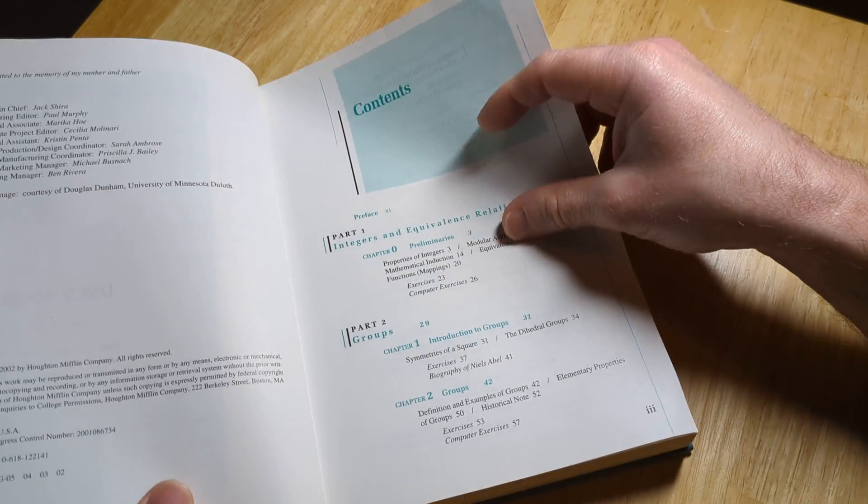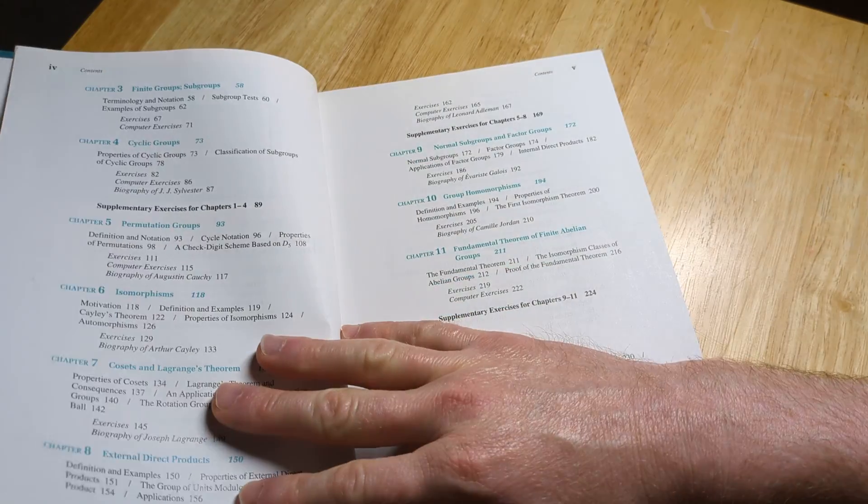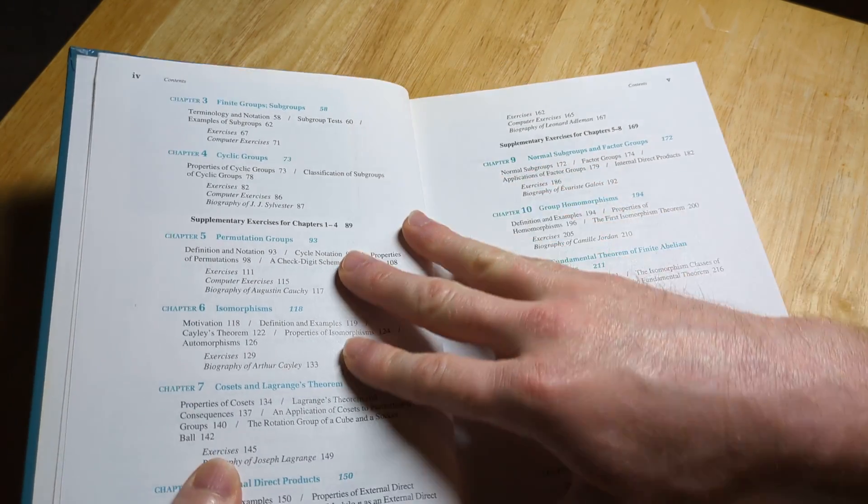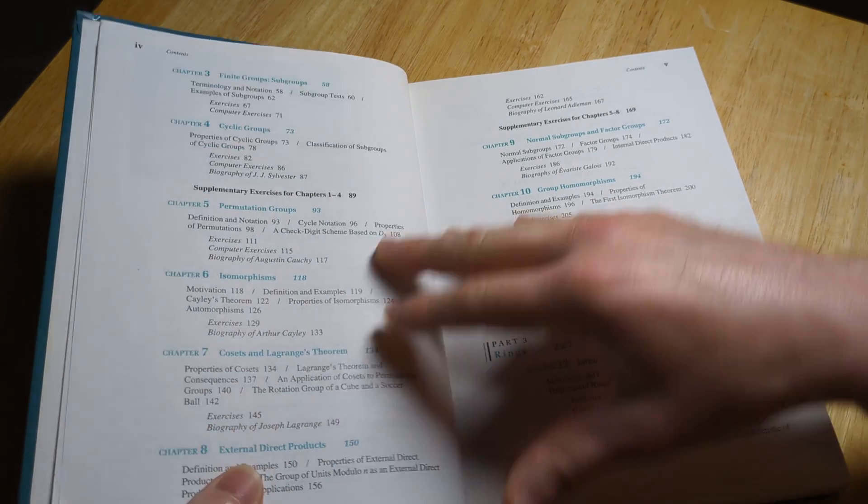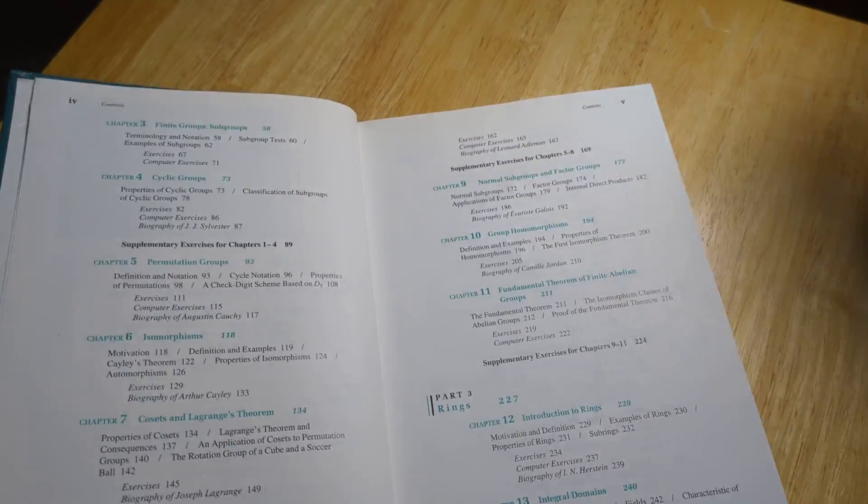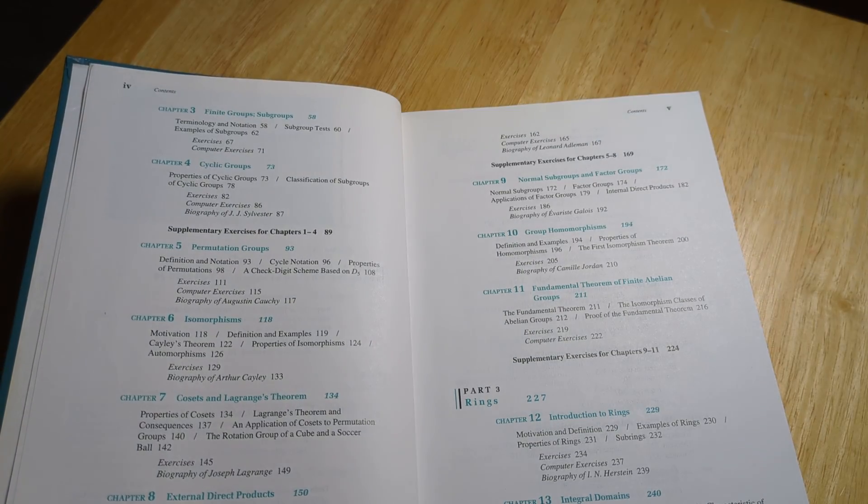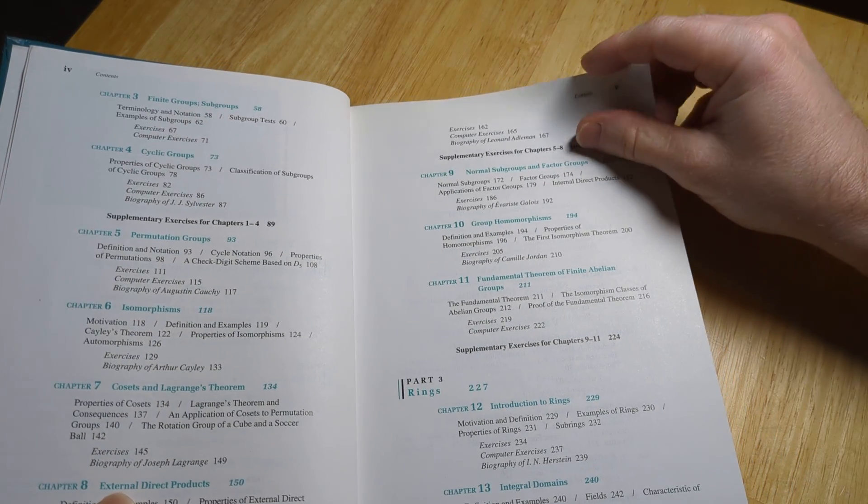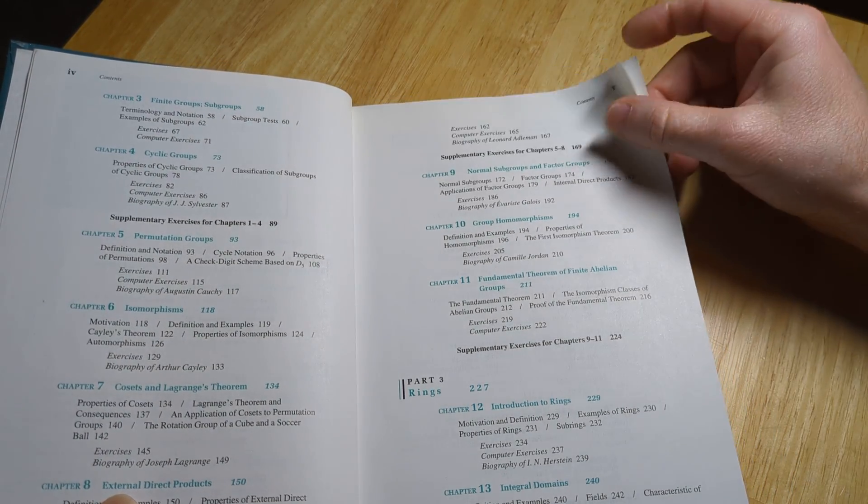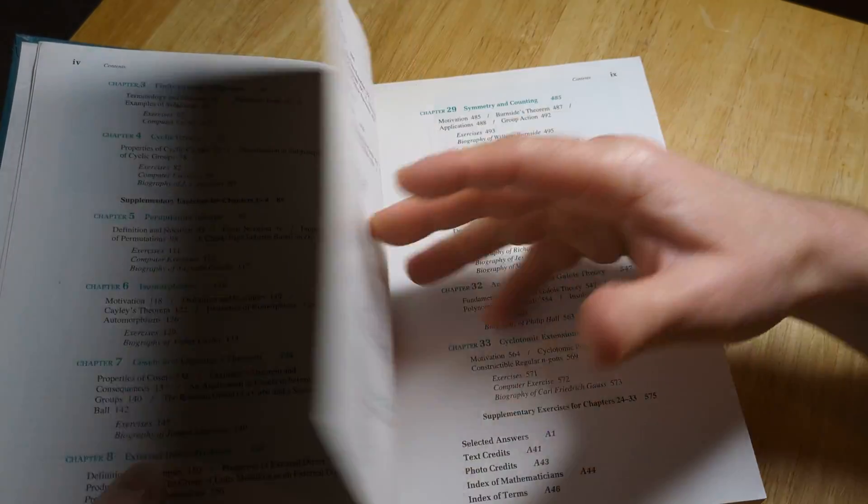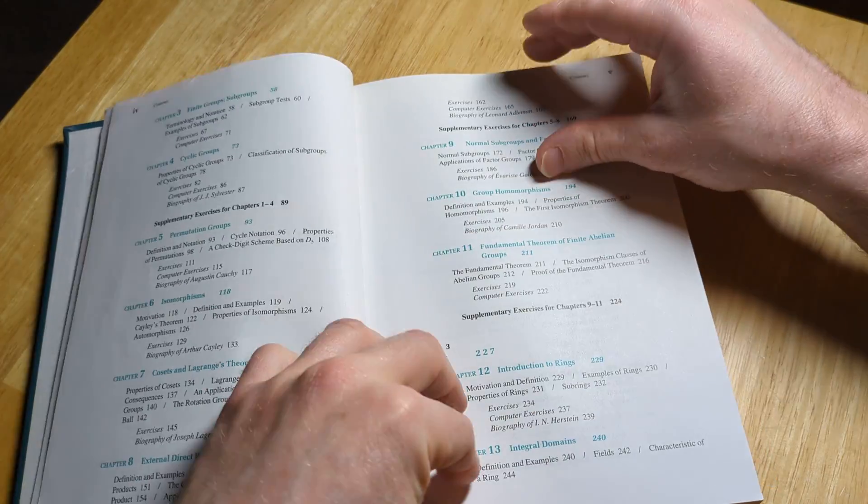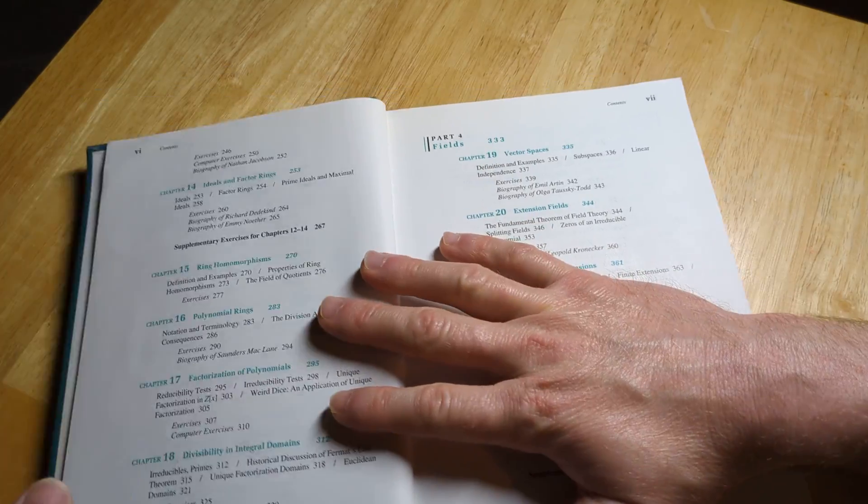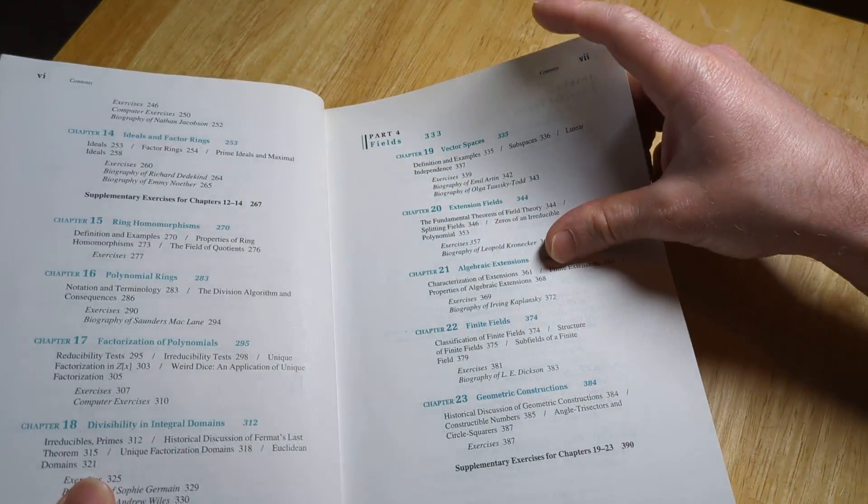This one starts with groups and finite subgroups, permutation groups, isomorphisms. Some more light here. Normal subgroups and factor groups.